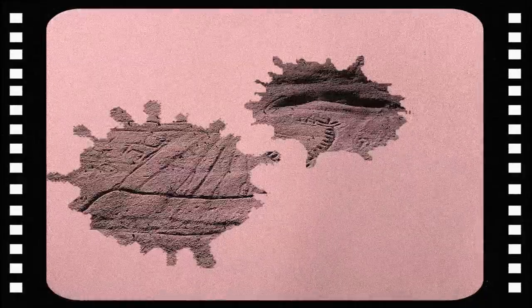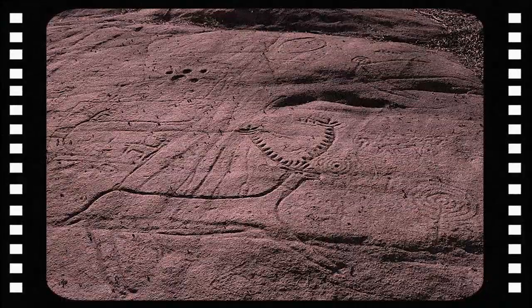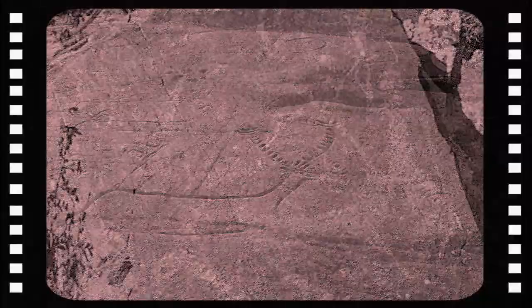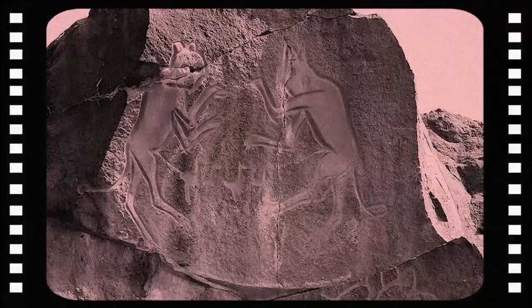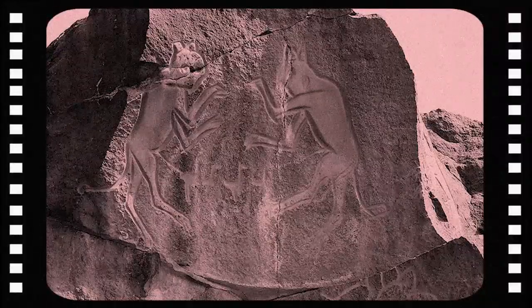Some of the earliest art we know of, called petroglyphs, were pictures carved straight into stone. Petroglyph sites in Australia are estimated to be 27,000 years old, and in other areas could be as old as 40,000 years.